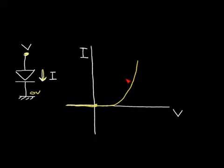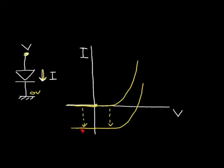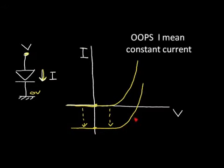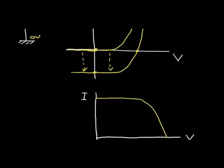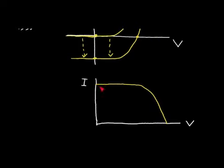What happens if we shine light on the silicon diode? Adding light causes this curve to shift downward. At the operating point we have current flow, more or less a constant voltage, and the current drops off to zero at the open-circuit voltage. In solar cell notation it's common to take this quadrant and redraw it, inverting the axis so current is plotted as positive upward and voltage is positive to the right.